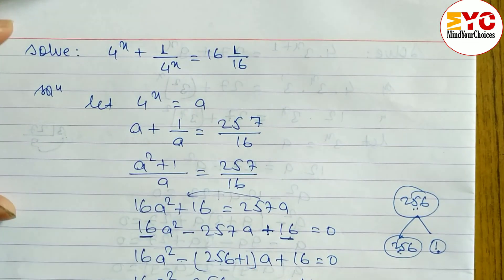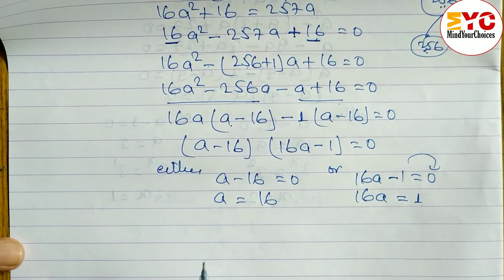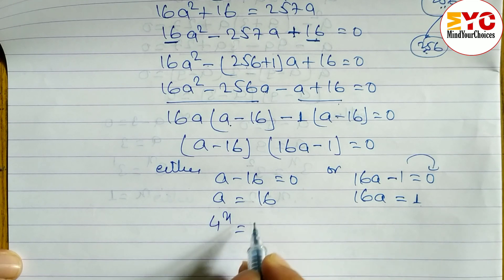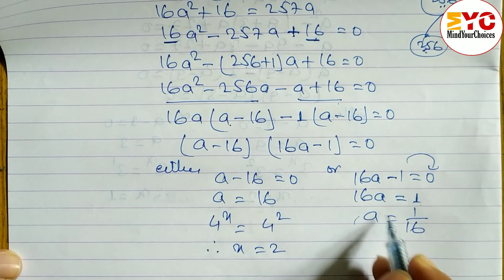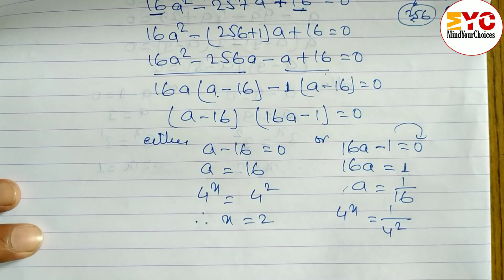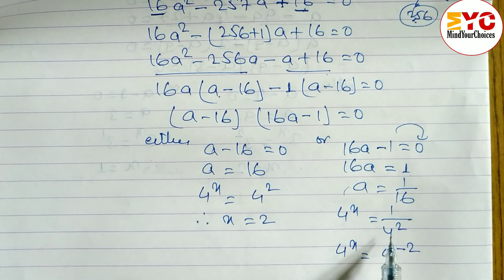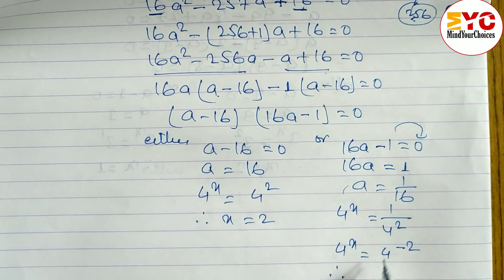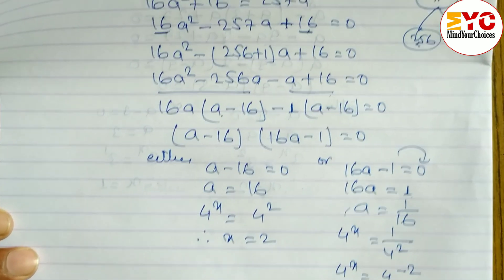Now substituting back, since a = 4^x: For a = 16, we write 4^x = 16 = 4², so x = 2. For a = 1/16, we write 4^x = 1/16 = 1/4² = 4^(-2). Since the base is the same, the powers must be equal, so x = -2. Therefore the answers are x = 2 and x = -2.